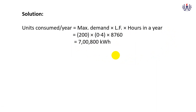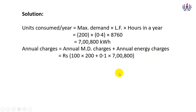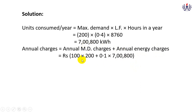Next, find the annual overall charges, which equals annual maximum demand charges plus annual energy charges. Annual MD charges = rupees 100 × 200 = rupees 20,000. Annual energy charges = rupees 0.10 × 700,800 = rupees 70,080. Adding both gives total annual charges of rupees 90,080.